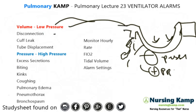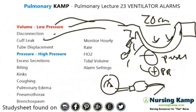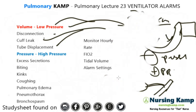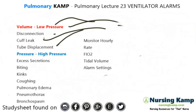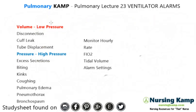A low-pressure alarm indicates either a disconnection of the tubing or a cuff leak. Normal cuff pressure should be no greater than 20 cm's — anywhere from 8 to 28 — and you check cuff pressures every 8 hours using a cuff pressure manometer. Tube displacement can also trigger a low-pressure alarm if the tube is migrating up due to a leaking cuff. On the NCLEX, they'll tell you it's a low-pressure or high-pressure alarm — you won't need to identify it by sound.